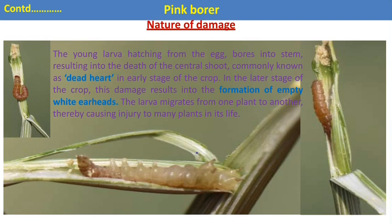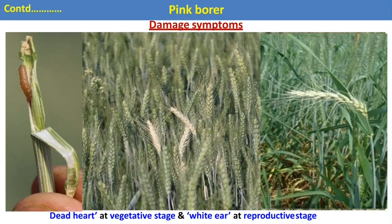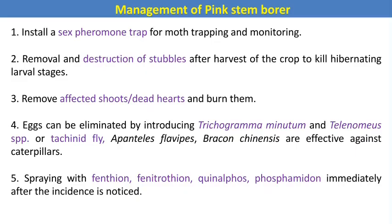After hatching from the eggs, the caterpillar enters tender or growing shoots and feeds on the inner content, producing the characteristic dead heart symptom — the central shoot withers and dries, and yellowing of the leaves occurs. In case of severe infestation, the formation of empty ear heads, also called white ear heads or locally known as 'puddings,' is produced due to the feeding of the caterpillar. The dead heart at vegetative stage and white ear heads at reproductive stage are the two major characteristic symptoms.